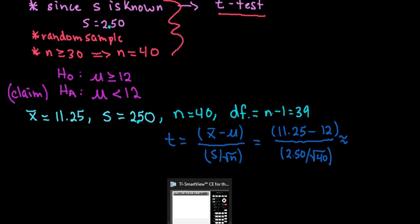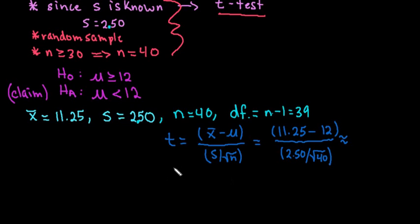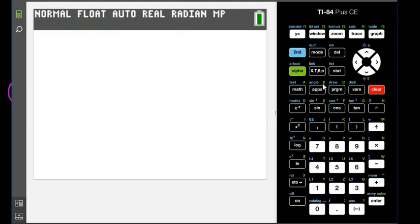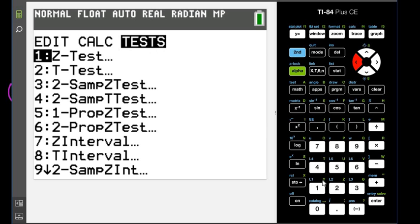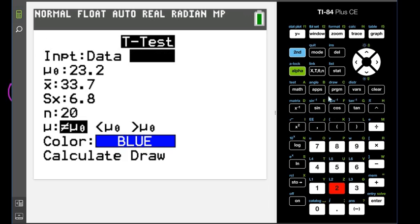We're going to go to our calculator. When I use the calculator, it will give me the standardized test statistic value and the p-value, which is the probability of getting this based on this distribution. To get there, we go to stat and tests. This one is called the t-test. You have to know the name of the test in order to use this. For this one, we know stats. We don't know the data, so we're going to just plug in all of our information.